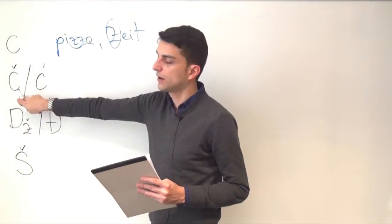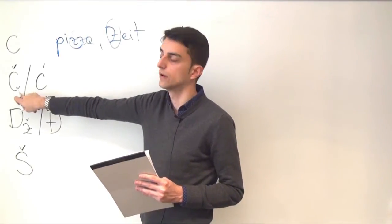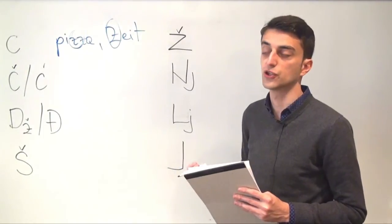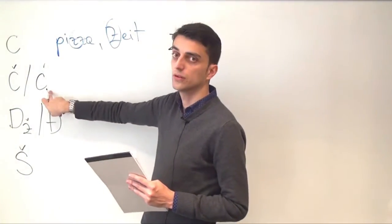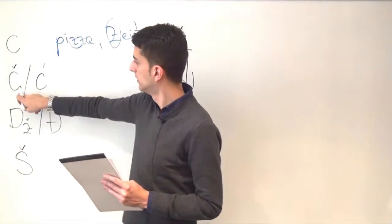Č is harsher sounding and that's one way to differentiate. Č is harsher sounding so it sounds a bit thicker. Where Ć is a bit lighter with softer sounding.